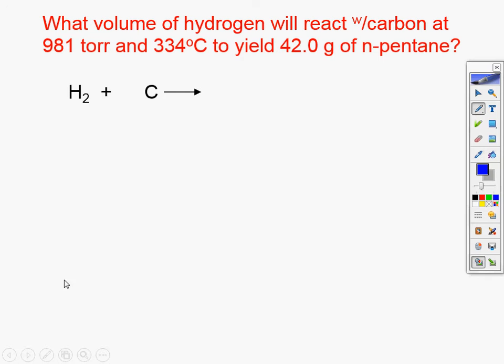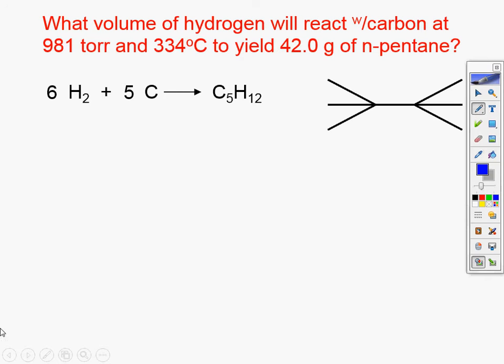A lot of you did this kind of backwards — combusting it or something. I'm not really sure what you got working. All I'm doing is making pentane, so I'm just putting those two together. That would generally lead me to what I need. You're not combusting it — there's nothing about combustion. I've got a little mole map there for you.